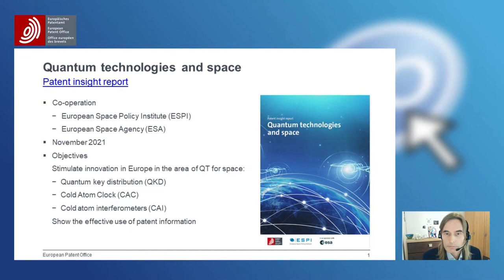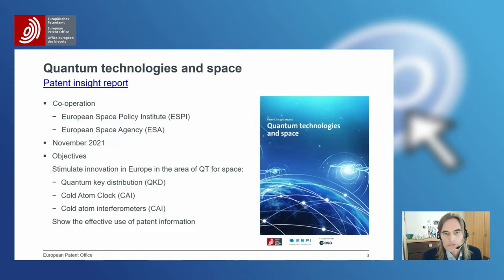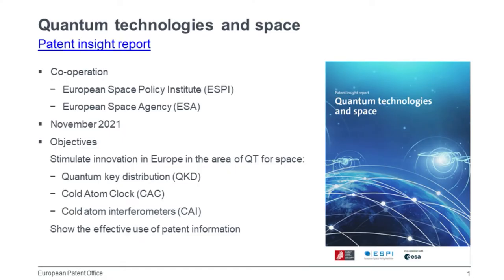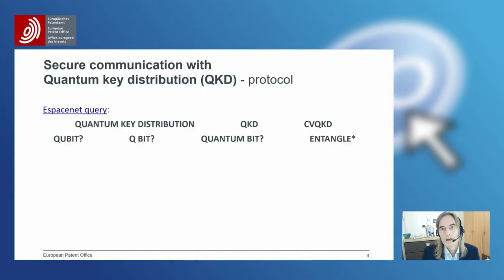Quantum key distribution is about secure communication. Cold atom clocks is about ultra-precise measurement of time. And cold atom interferometers is about earth sensing — for example, measuring the gravitational field of the earth. We want to use this case to show the effective use of patent information, and I will now dive into the queries that we have done.